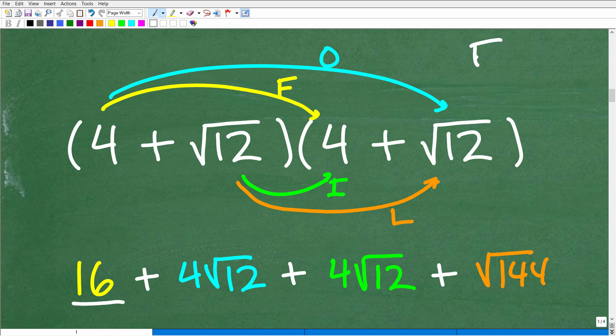So that's the F. Remember, we're using this procedure, FOIL. So we just did the F. Now we're moving on to the outer. First, outer, inner, last. So that's going to be 4 times the square root of 12. So I'll write that as 4 times the square root of 12. So we did that O. Now we're moving on to I. So the inner is going to be the square root of 12 times 4, which is going to be 4 times the square root of 12. So that's the inner. And then the last is going to be the square root of 12 times the square root of 12, which is going to be the square root of 144. All right. So when you're multiplying two square roots, you just multiply the numbers underneath the square roots. As long as they're both square roots, that's how you do it.